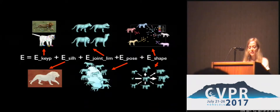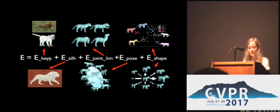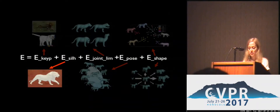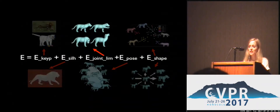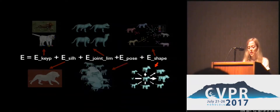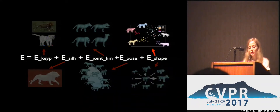In the experiments, we fit SMAL to images. We minimize an energy composed of different terms, using as input data the location of 20 keypoints and silhouettes that are manually annotated. We minimize a keypoint reprojection error term, a silhouette match term, a penalty for exceeding joint limits set manually, a pose prior learned as a multivariate Gaussian over the poses of the toys and from a synthetic walking sequence, and a shape prior term. This can be the global PCA space, or if we know the family of the animal we are fitting, we can use a family-specific shape prior.